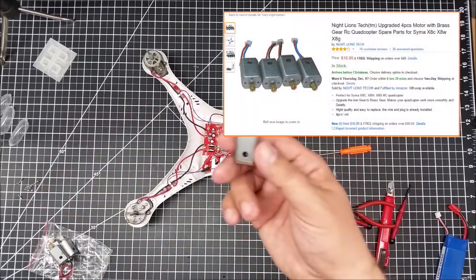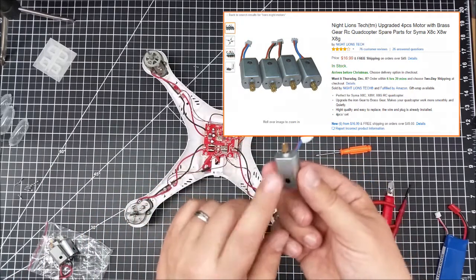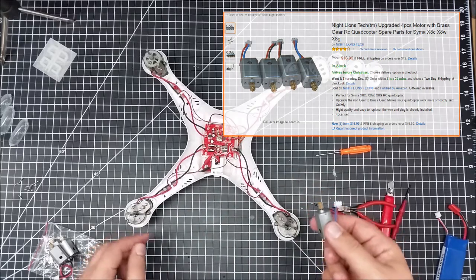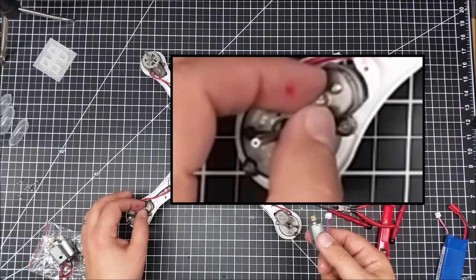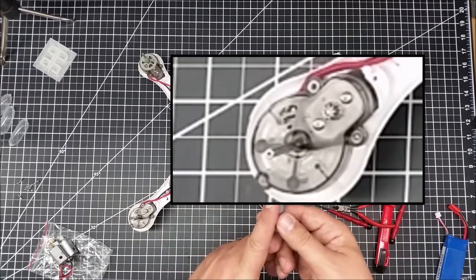we're going to replace its motors with the Lion's Knight replacement motors. One of the things you'll notice is that these have the metal gears, where these have the brass gears. All in all, these are supposed to be a better motor.